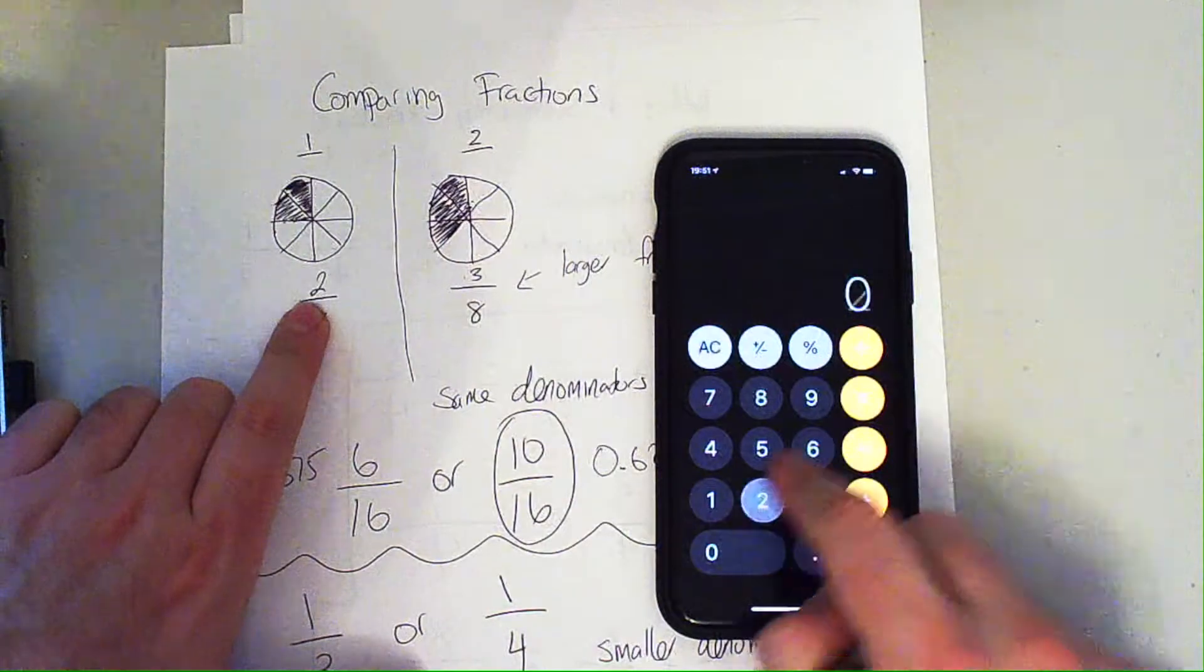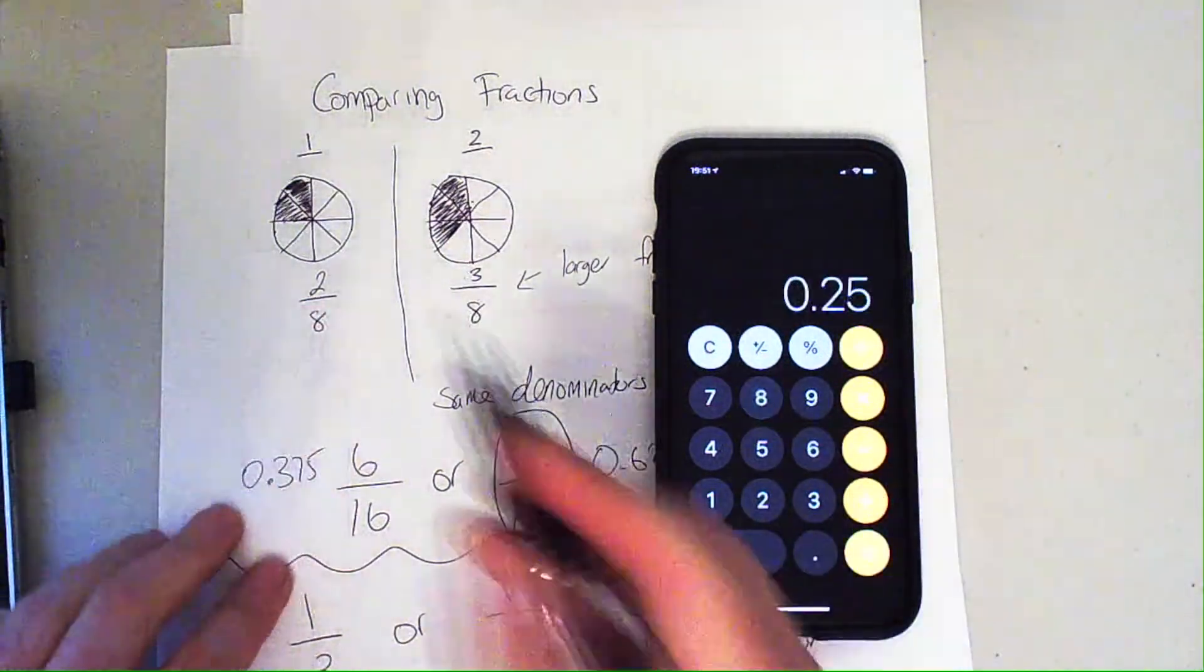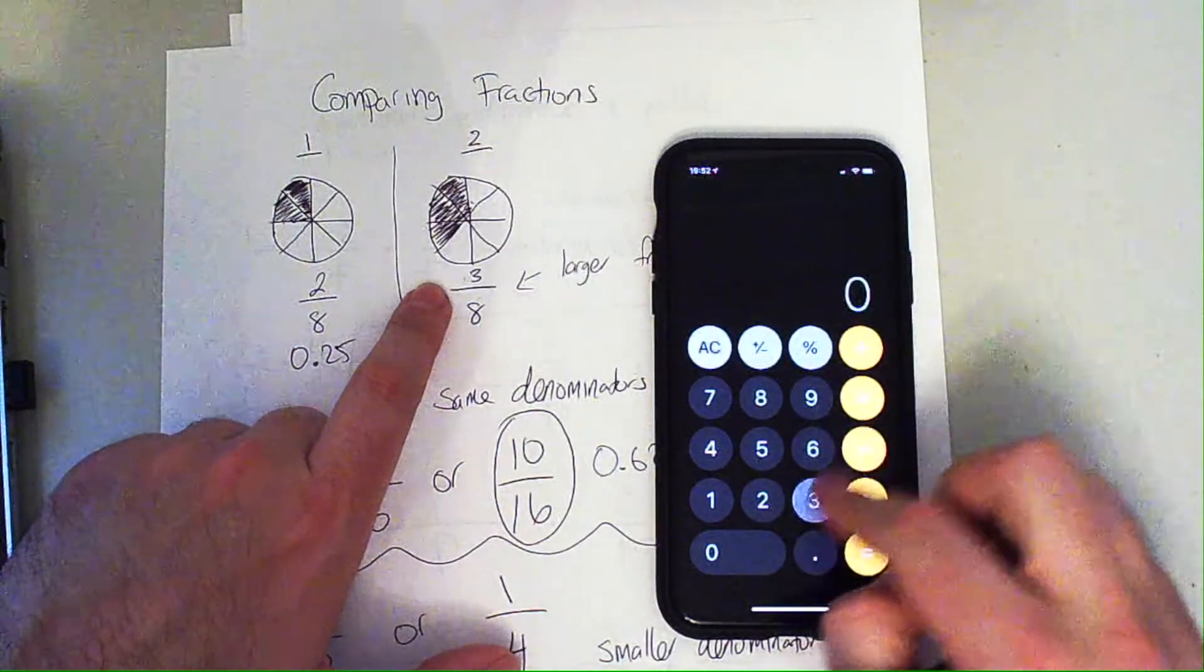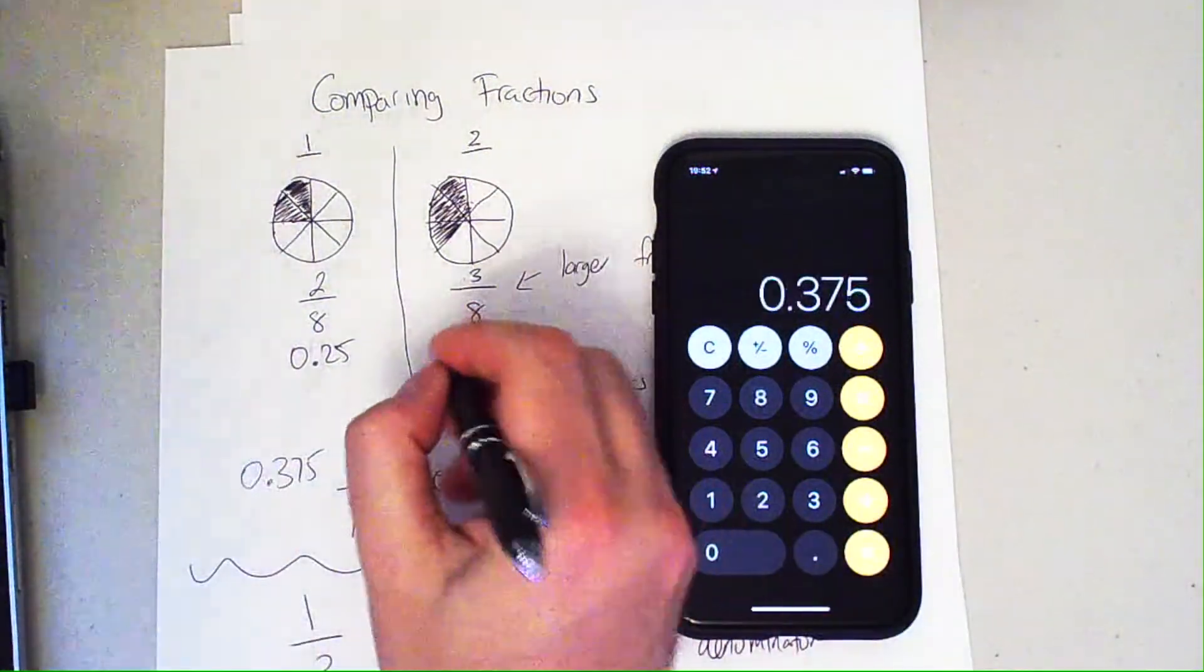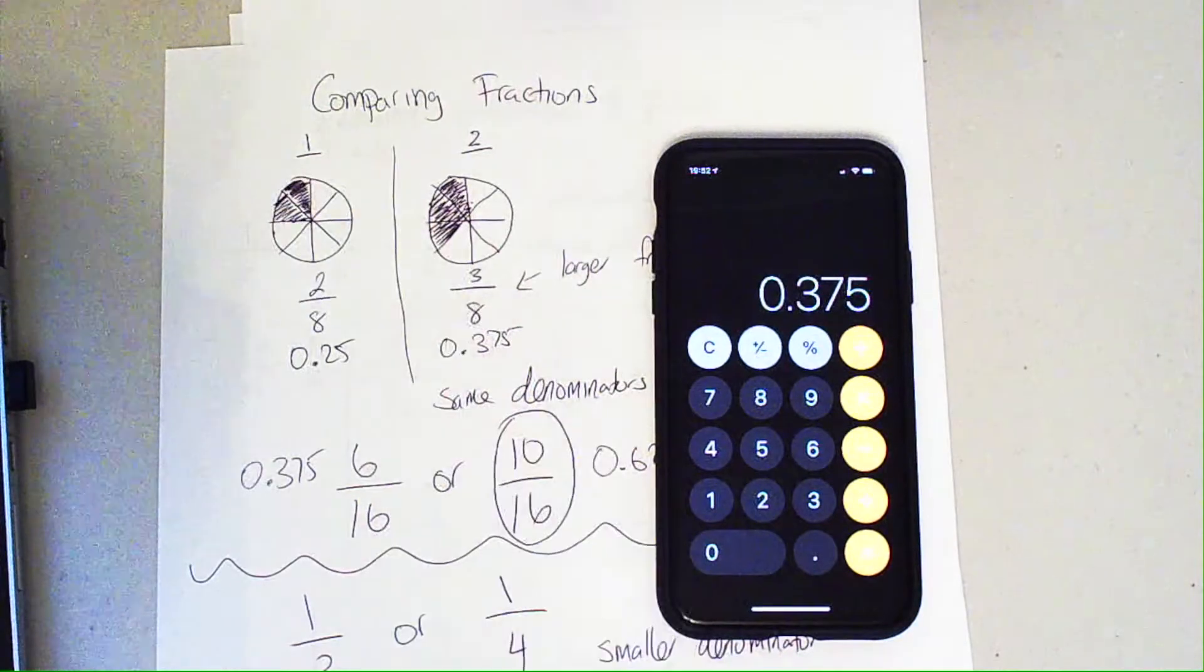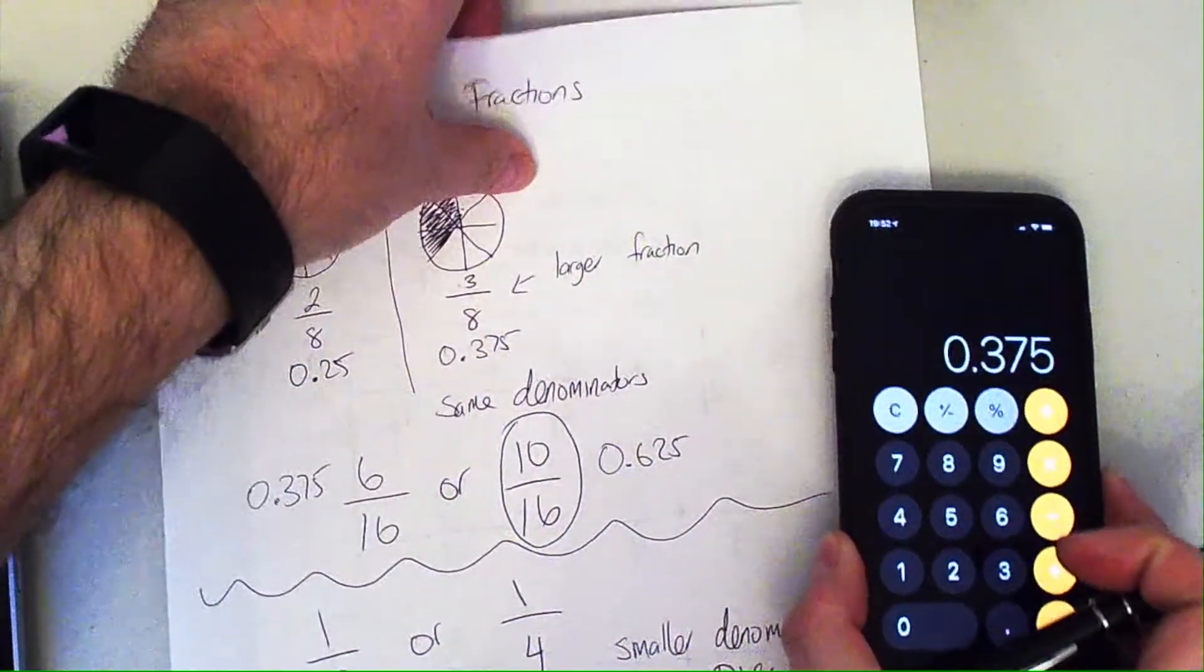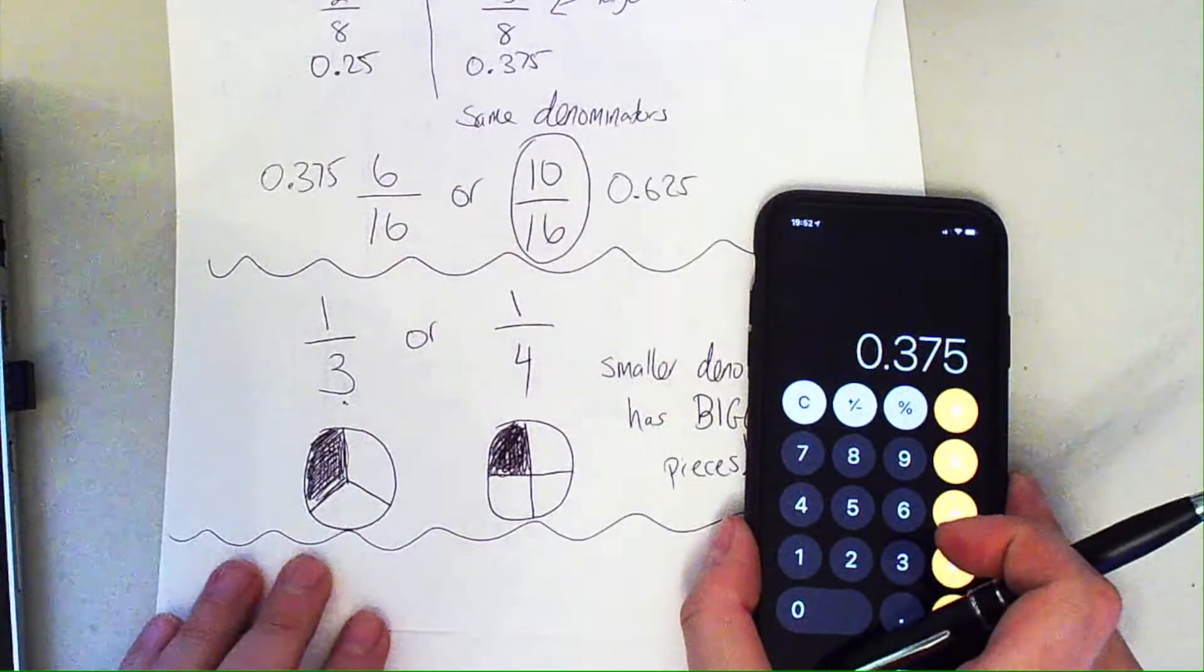If we go back to the original example, 2 divided by 8, 0.25. And this 3 divided by 8, 0.375. This was the larger fraction to begin with, and here's the evidence why. Now let's go to our last example here.